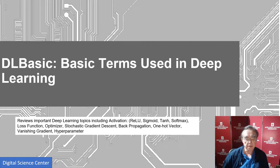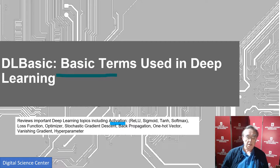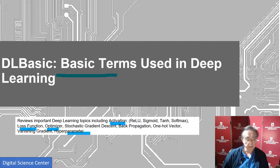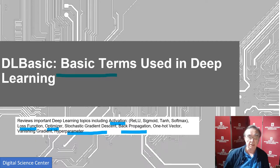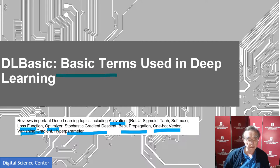Here are the basic terms — that's the topic of this lesson. We'll look at activation functions: RELU, sigmoid, tanh, and softmax. The loss function, we've already mentioned. The optimizer, we've mentioned issues there. We've already mentioned stochastic gradient descent. We didn't mention backpropagation. We talked about one-hot vectors in the example, and we also mentioned the problems with vanishing gradient, but not in any depth.